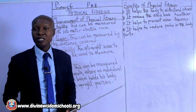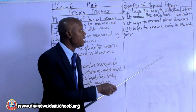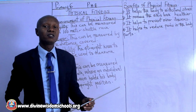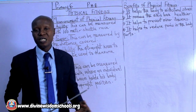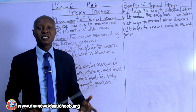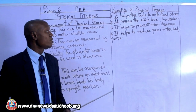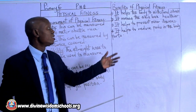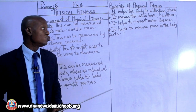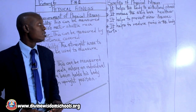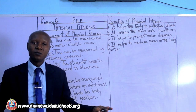Number four and the last benefit of physical fitness is it helps to reduce pains in the body parts. When we talk about physical fitness, we cannot complete it without talking about aerobics. When we are involved in aerobics, we are actually exercising the body. When we exercise the body, we have a strong body so that when we are involved in any activities, pain is reduced because we are used to these activities through the aerobics we normally do, either on a daily basis or weekly. That is all we can take for today. You can do the homework. Thank you. Bye.